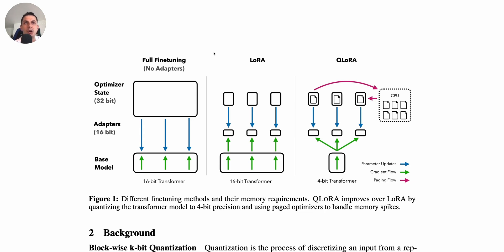This fine-tuning approach is very expensive because you need to load the full model, which might require for LAMA about 780 gigabytes of GPU RAM — very, very prohibitive — and it's also going to be pretty time-consuming because you have to update the whole model.